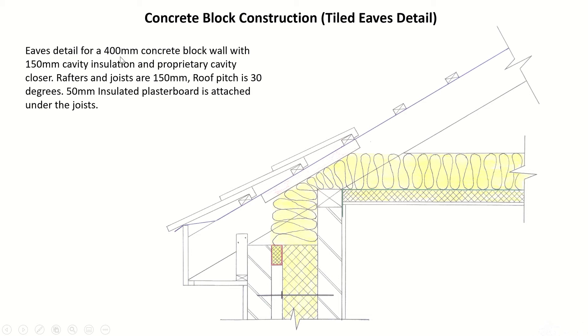We have an eaves detail for a 400mm concrete block wall with 150mm cavity insulation and a proprietary cavity closer. Rafters and joists are 150mm. The roof pitch is 30 degrees. 50mm insulated plasterboard is attached under the joists. We can see the air tightness in green, the wall tie in position with the insulation placed tightly against the internal leaf, and our felt with tiles in position. By the end of this, we're going to know how to draw that entire section.